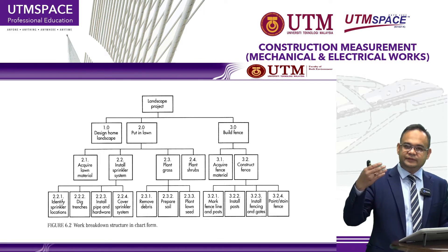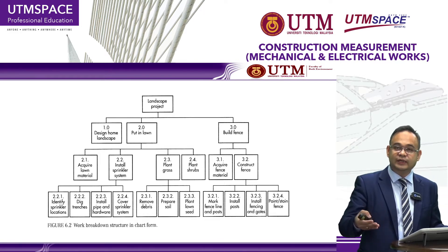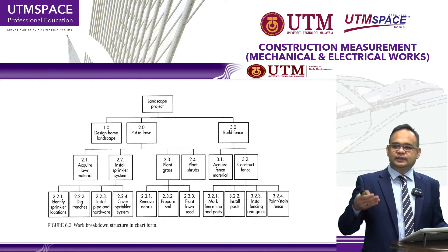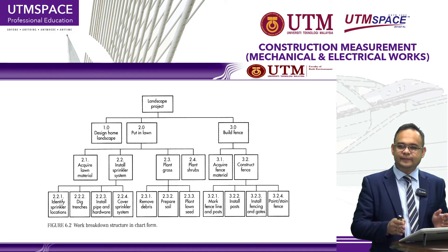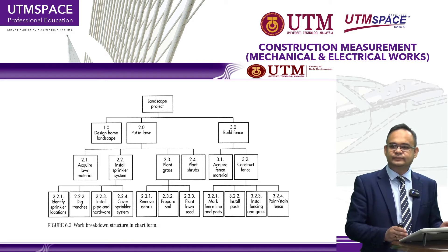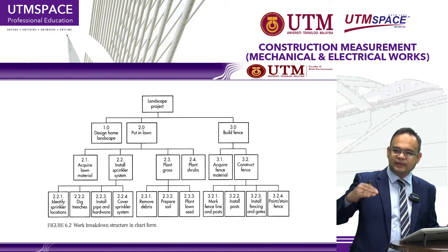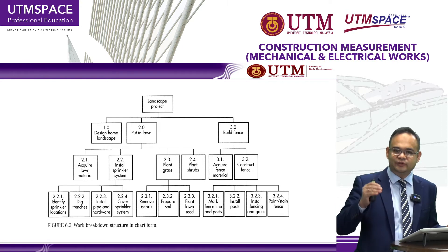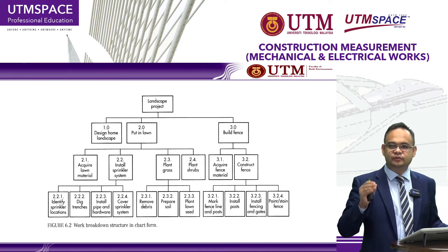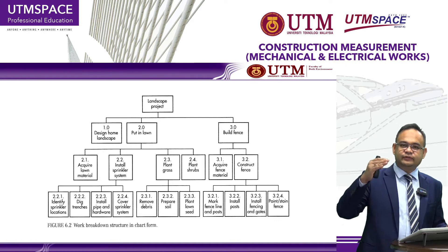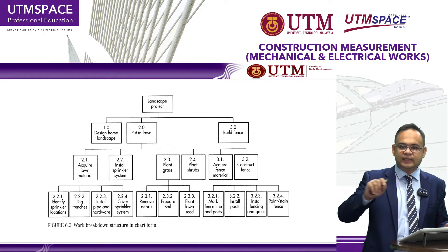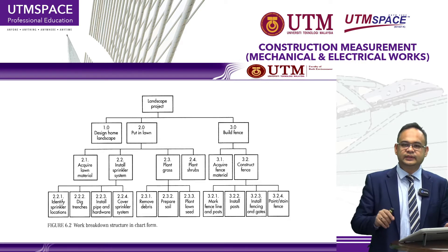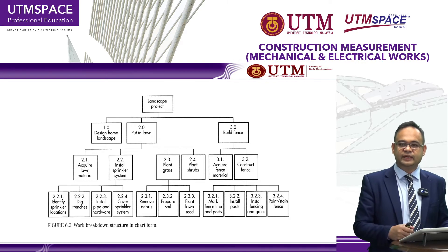We also have sub-activities such as 2.1, 2.2, 2.3, 2.4, and further layers beneath them. This is what we call the main item and then the list of sub-items. This is how we do cost management in building — by clearly listing the main items and their sub-items.